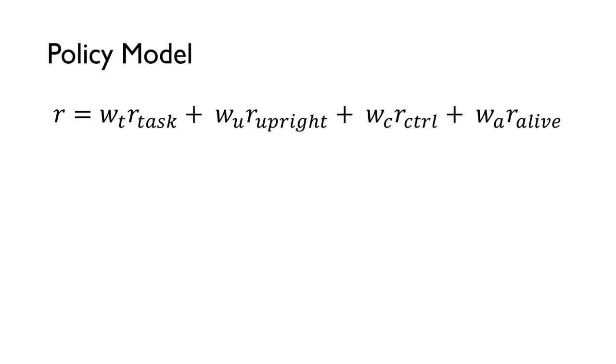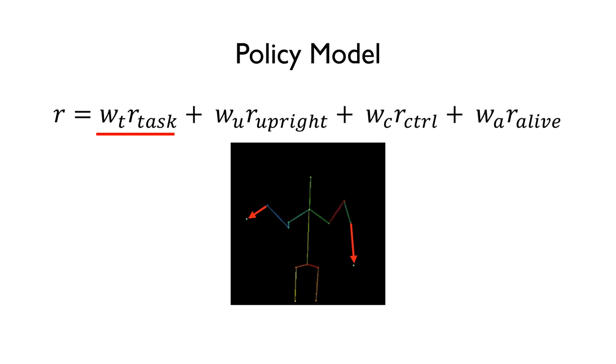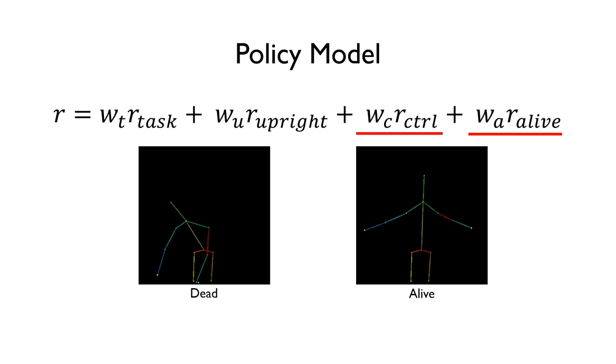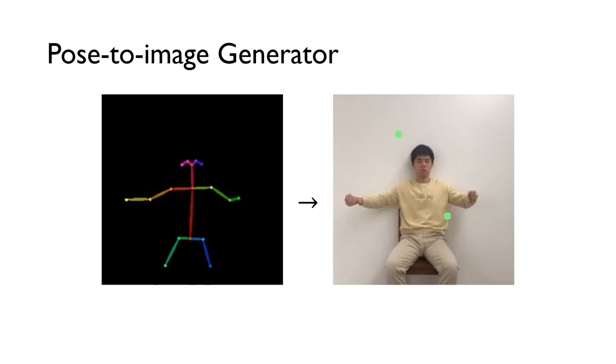Our reward function consists of four terms. The task reward encourages the policy model to minimize the deviation from the goal of the task. The upright reward encourages the agent to maintain its neck and head upright. The control reward encourages minimal actions which lead to smoother actions. The alive reward penalizes the policy from falling down.